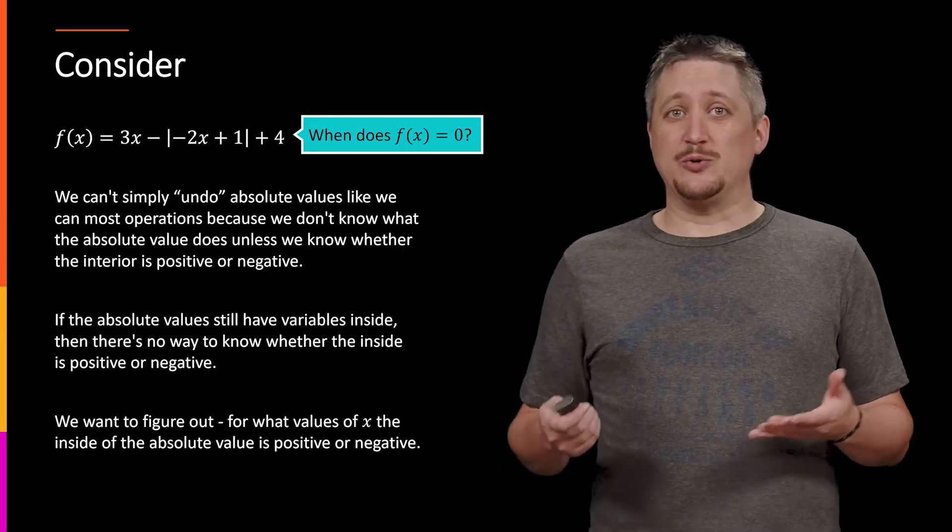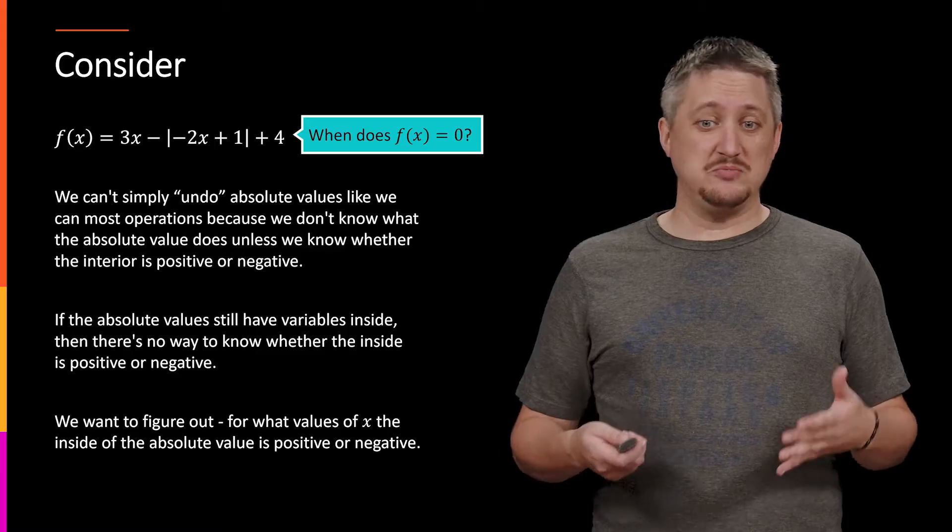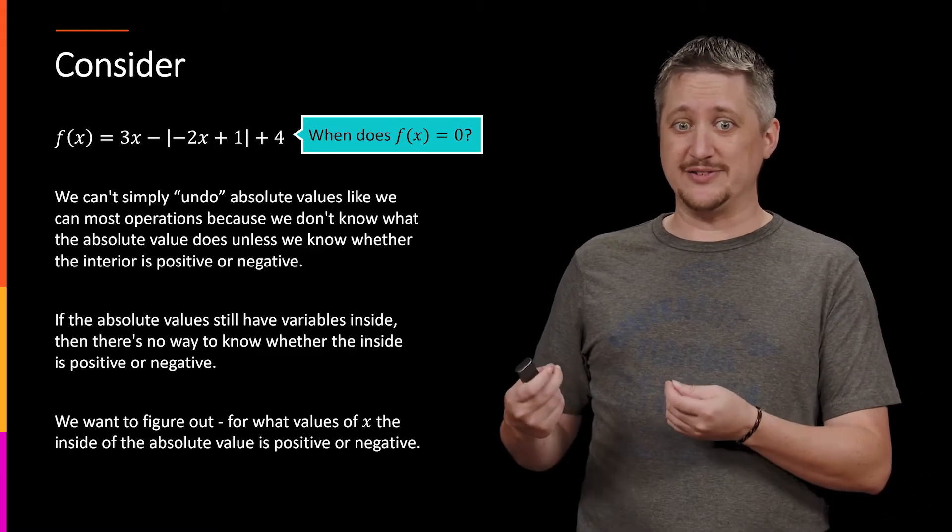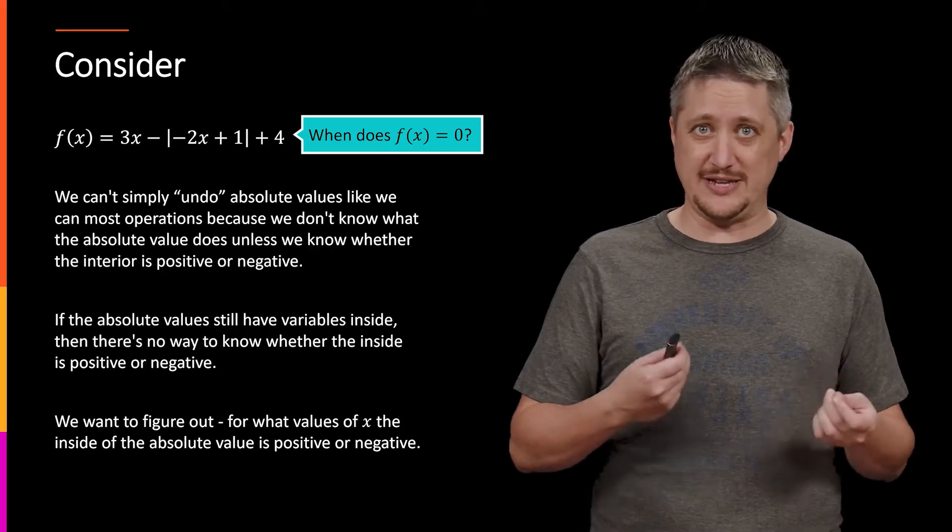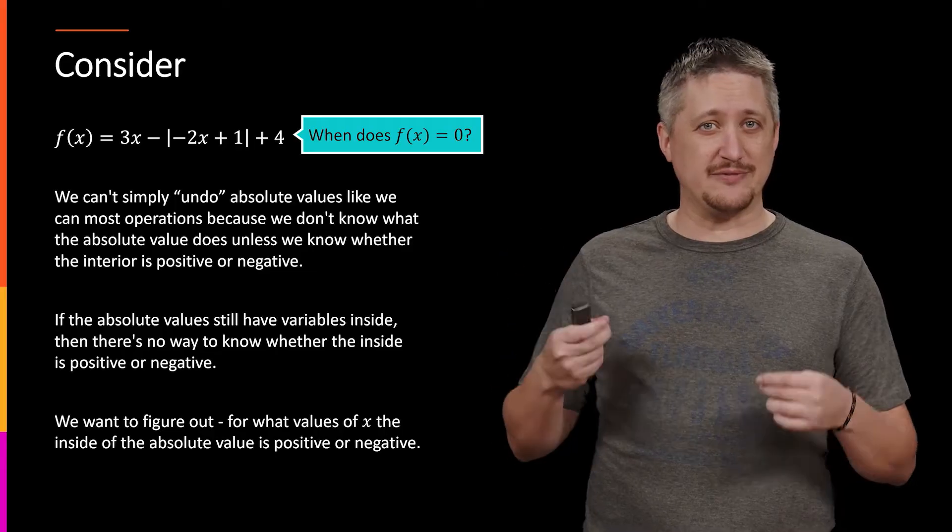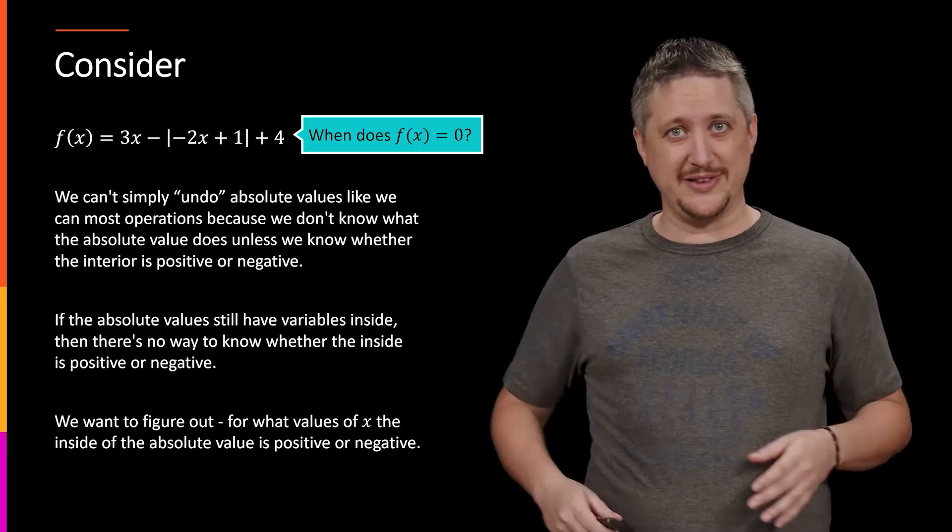So if the absolute value still has variables inside, we don't know whether it's positive or negative, and thus we can't undo it like we can normal operations. That means that in order to solve this question, we need to figure out what values of x inside the absolute value part gives us a positive versus a negative interior. This should sound vaguely familiar from the piecewise function. In fact, we'll talk about that closer to the end of this video.